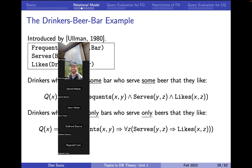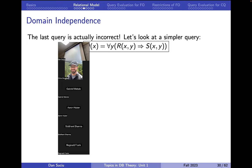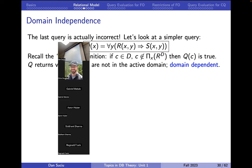A quick reminder from last time: this query is incorrect — it is domain-dependent. When we use this universal quantifier and quantify a variable universally, we need to iterate over the entire domain. Depending on how big our domain is, or whether it includes all bars or something else, the meaning of the query changes. This is an issue if you want every first-order logic formula to be a valid query. It's not — you need to make it domain-independent. We showed that this formula is indeed domain-dependent; it depends on the domain over which we iterate.